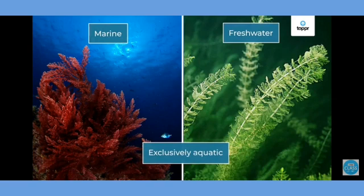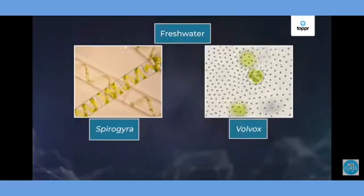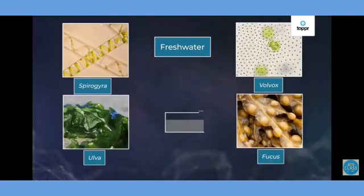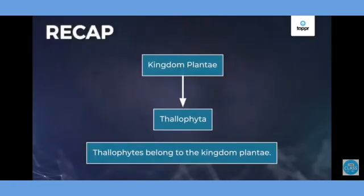Algae are mostly found in marine and freshwater environments, as you can see in the picture. Importantly, they are also found in extreme environments like ice-covered regions and hot springs, which is why they are known to survive in diverse areas. Freshwater Thallophyta examples include Spirogyra and Volvox. Others like Ulva and Fucus also grow in freshwater.